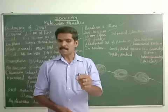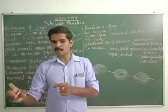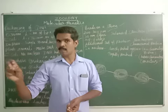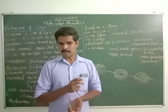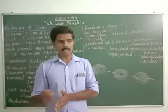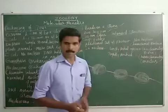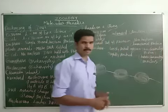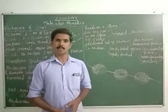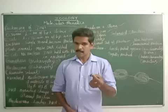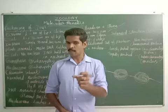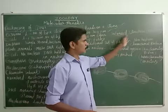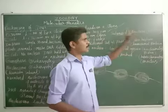30-nanometer fibers arise from the folding of nucleosomes. These 30-nanometer fibers are changed into another structure called the solenoid structure. The solenoid structure consists of 6 nucleosomes.